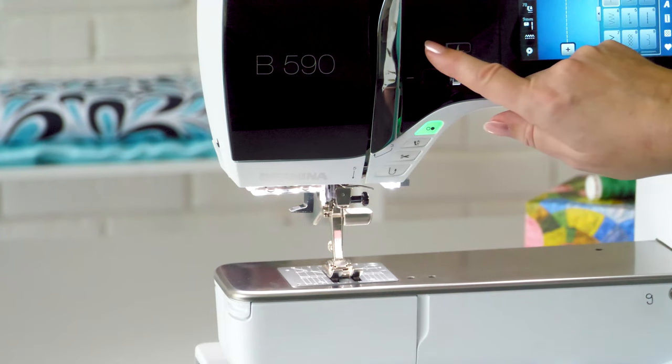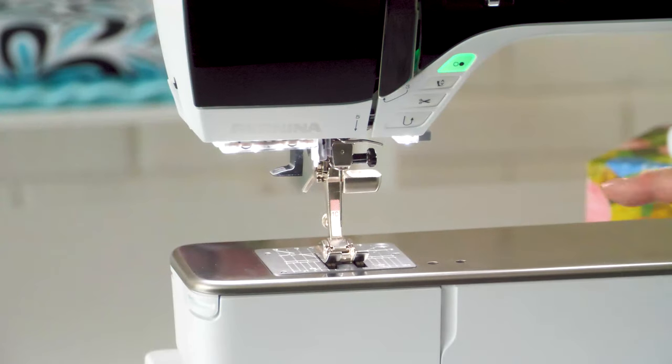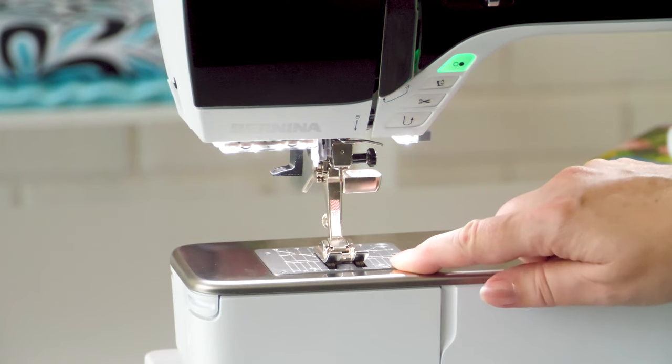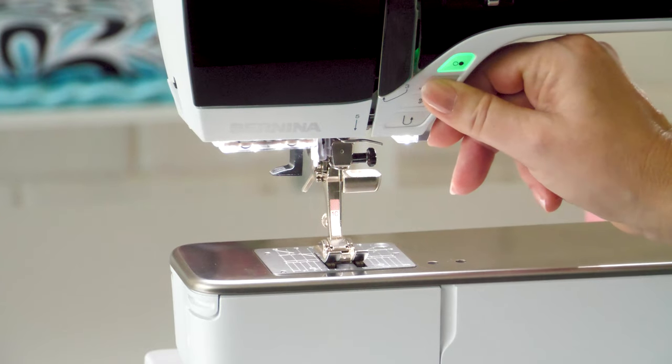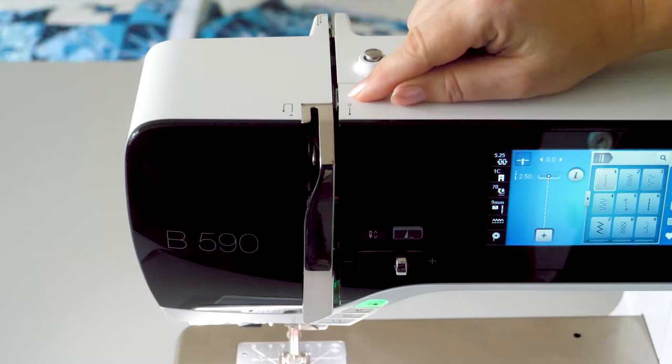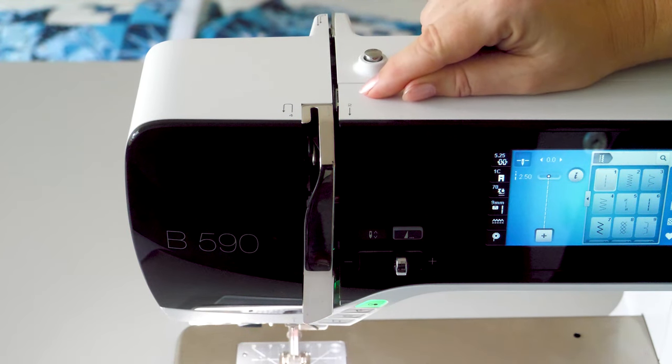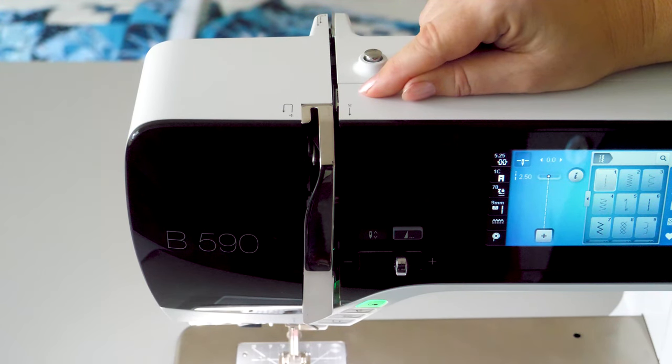The presser foot must always be up when threading. If this is not the case, the tension discs are closed and the thread cannot lie between the discs. The result is no upper thread tension and too much thread is pulled down at the first stitch, causing a thread nest.